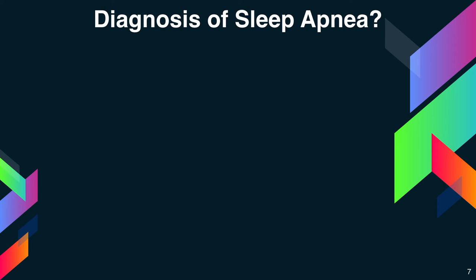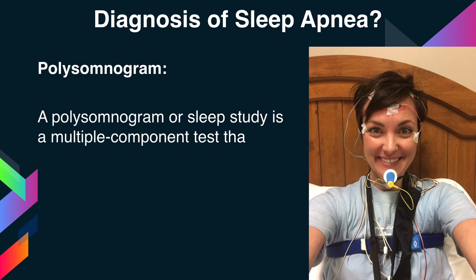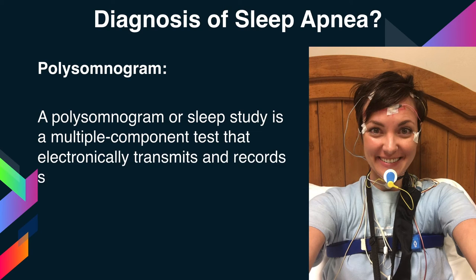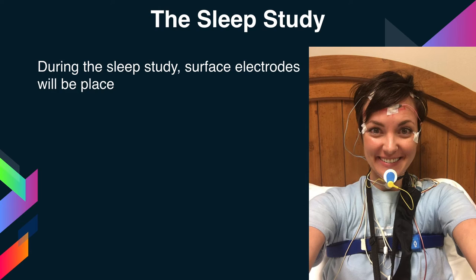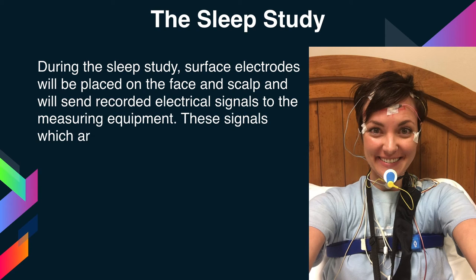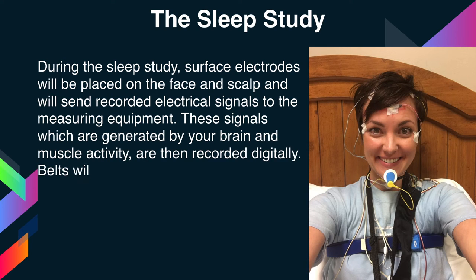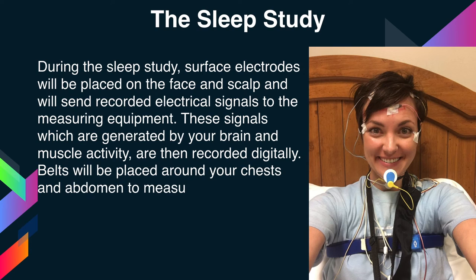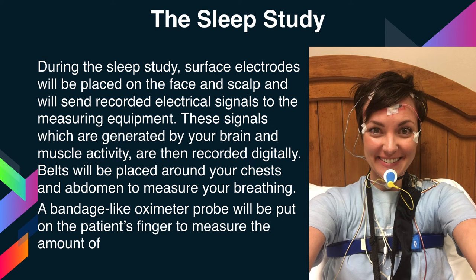Now, what is the diagnosis? If you have symptoms of sleep apnea, your doctor may ask you to have a test called a polysomnogram. A polysomnogram, or sleep study, is a multiple-component test that electronically transmits and records specific physical activities while you sleep. Surface electrodes placed on the face and scalp send recorded electrical signals to measuring equipment, recording brain and muscle activity digitally. Belts placed around your chest and abdomen measure your breathing, and a bandage-like oximeter probe on the finger measures the amount of oxygen in the blood.